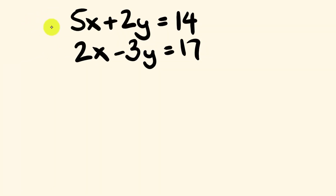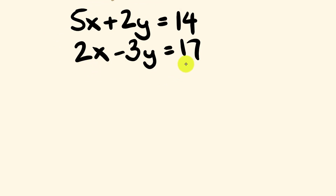So let's have a look at our second example. We have 5x plus 2y is equal to 14, and a second equation: 2x minus 3y is equal to 17. Once again, we're going to be solving for x and for y.